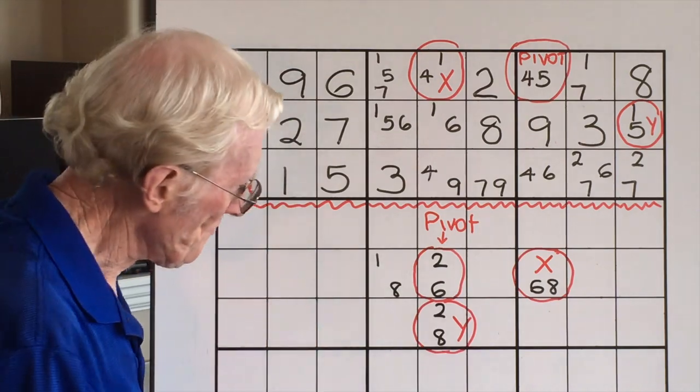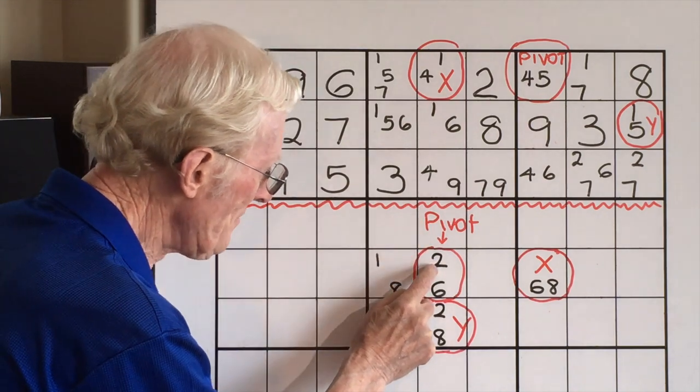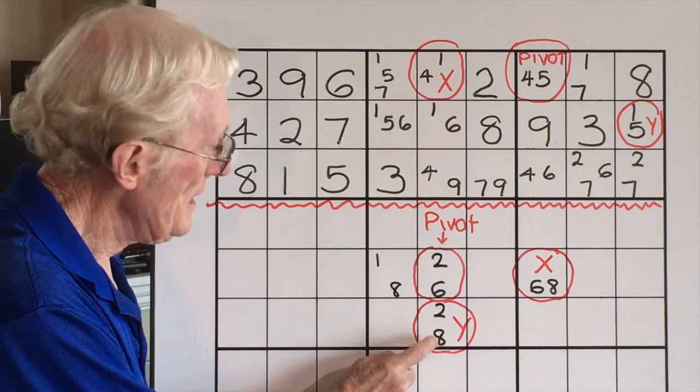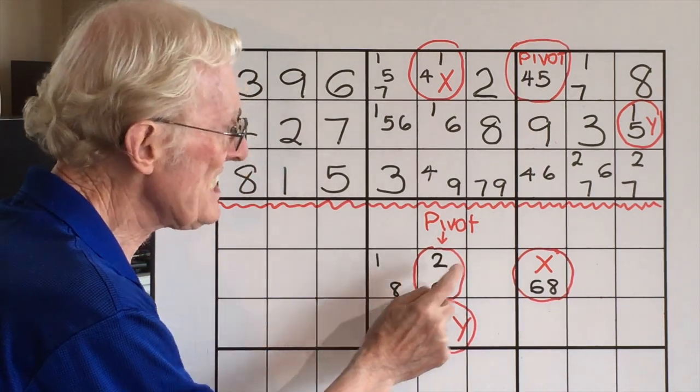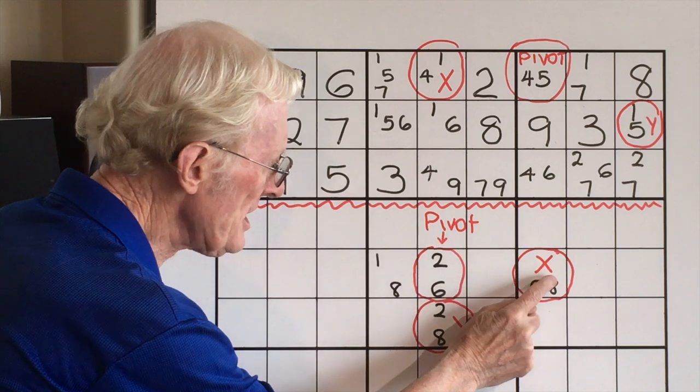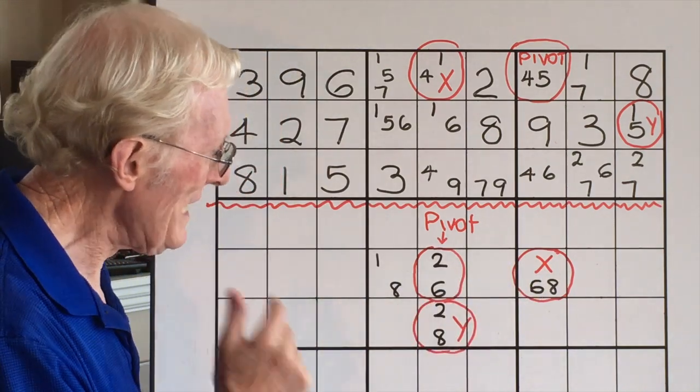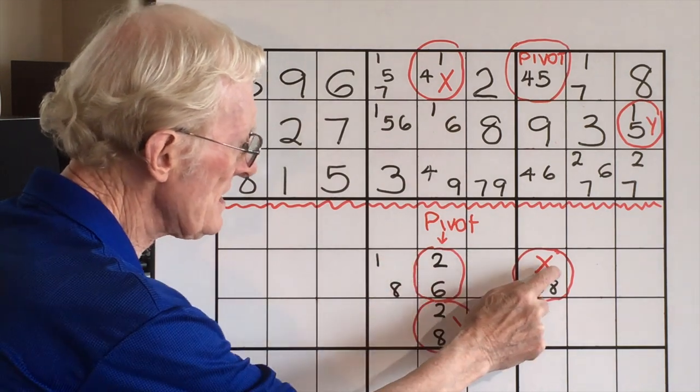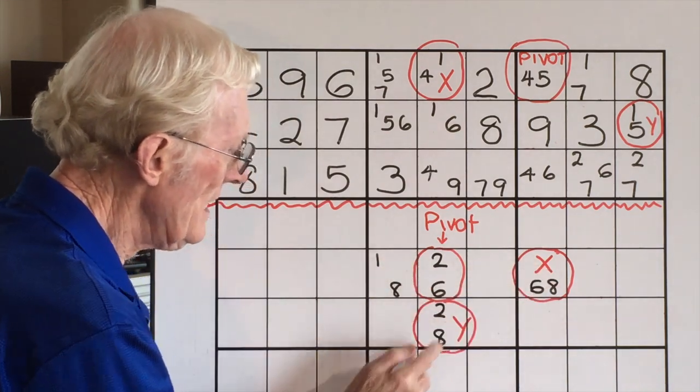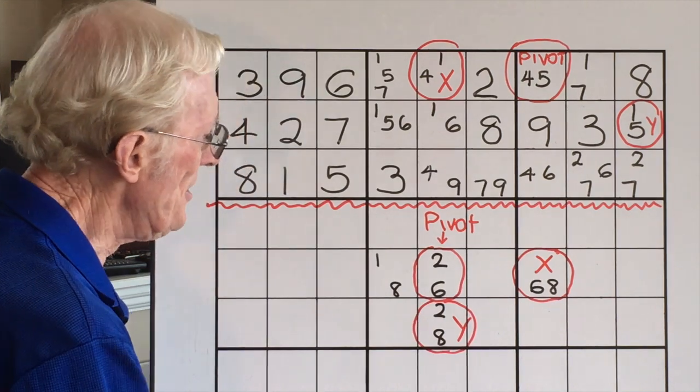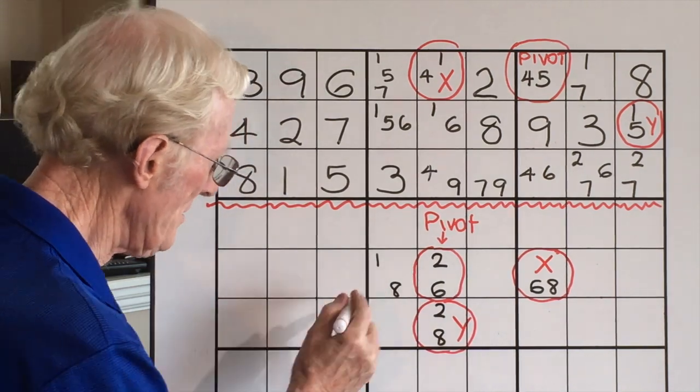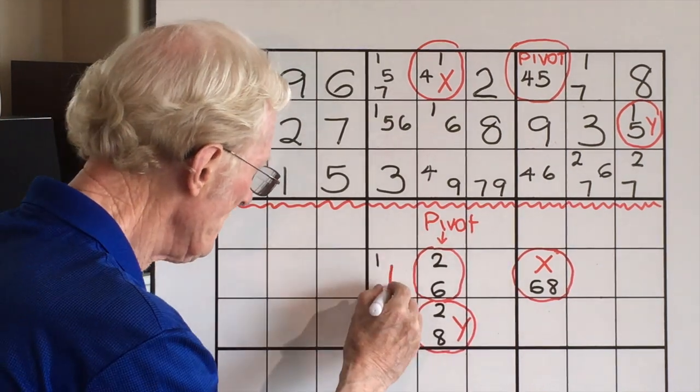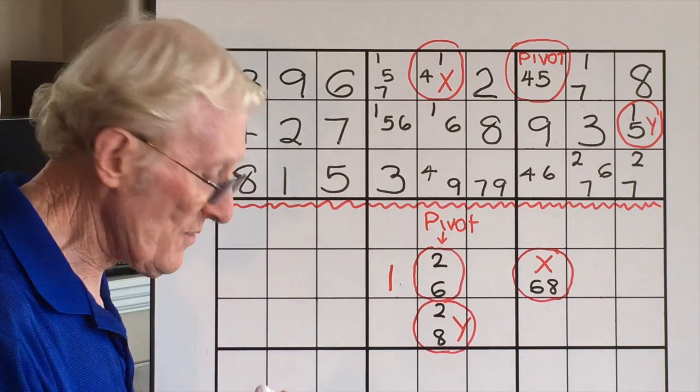And it's amazing. If this pivot has a 2 then this becomes an 8. If this pivot has a 6 then this becomes an 8. So it doesn't matter what number is in the pivot, that is an 8 or that could be an 8. And if that is the case this 8 here can be eliminated. And it becomes a 1. So that's the first example.